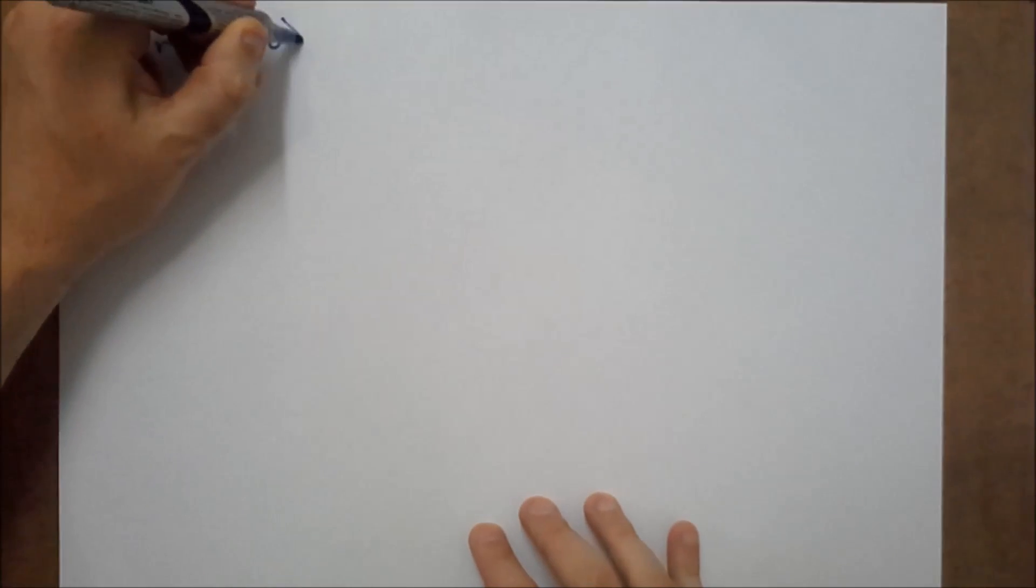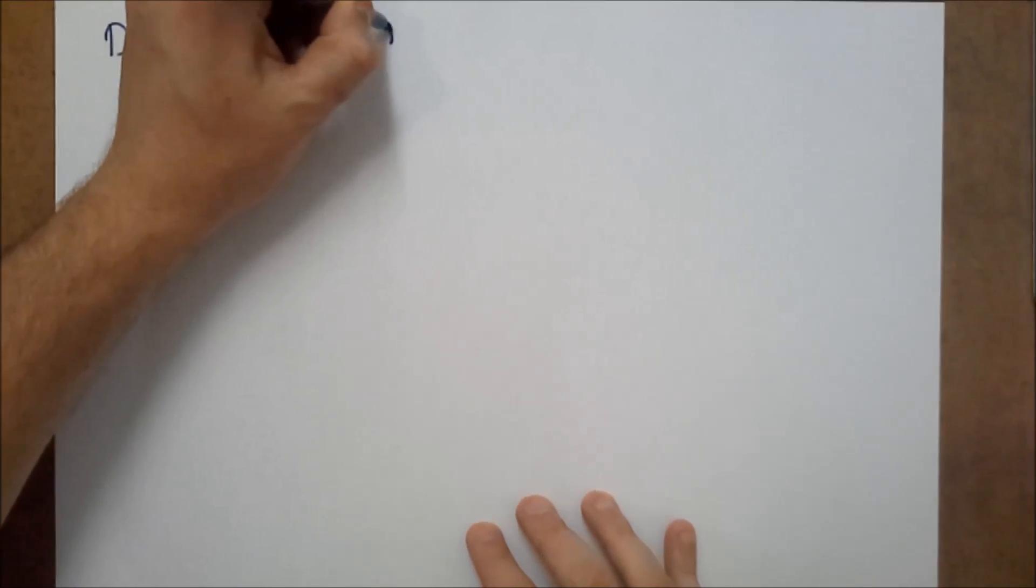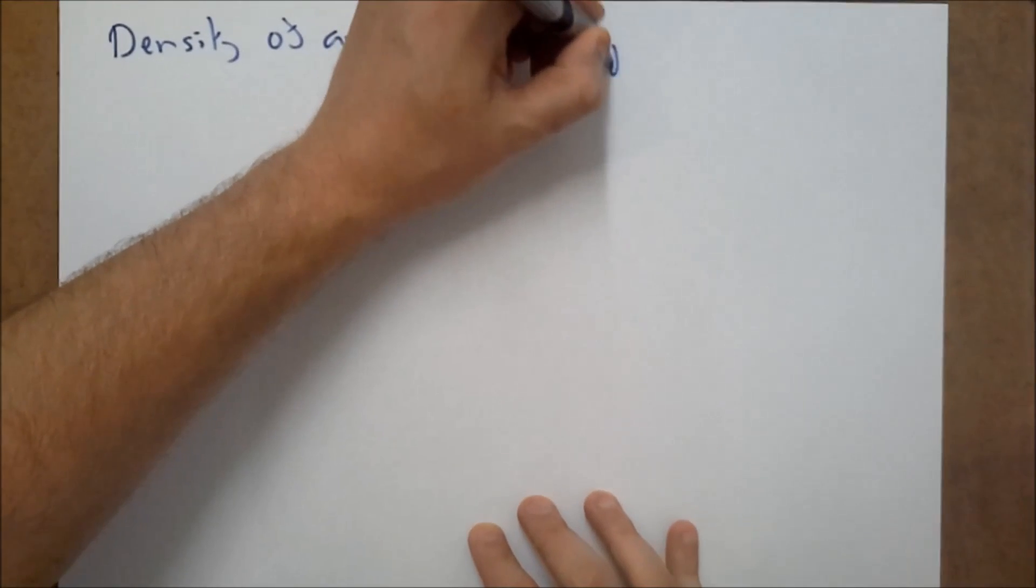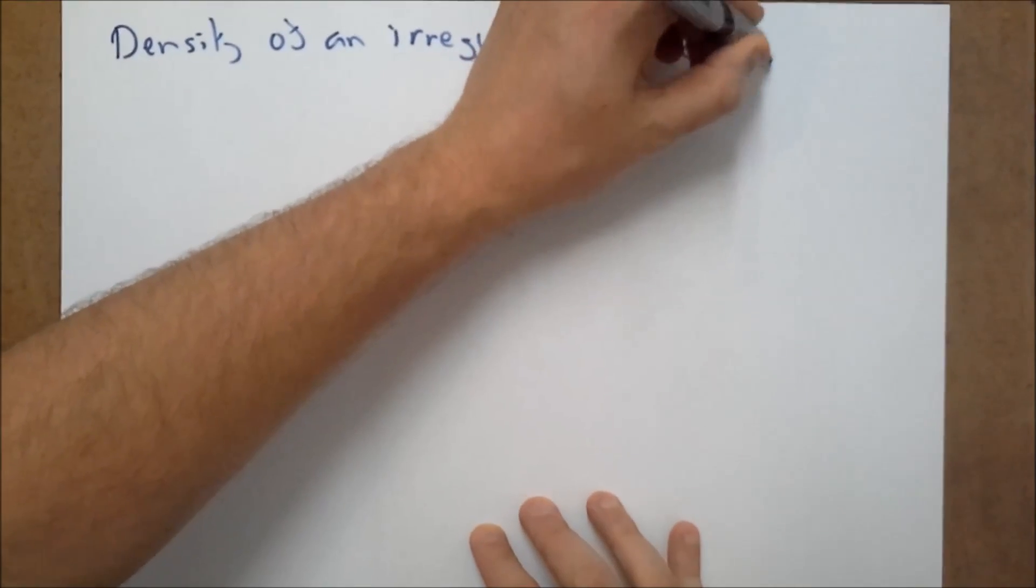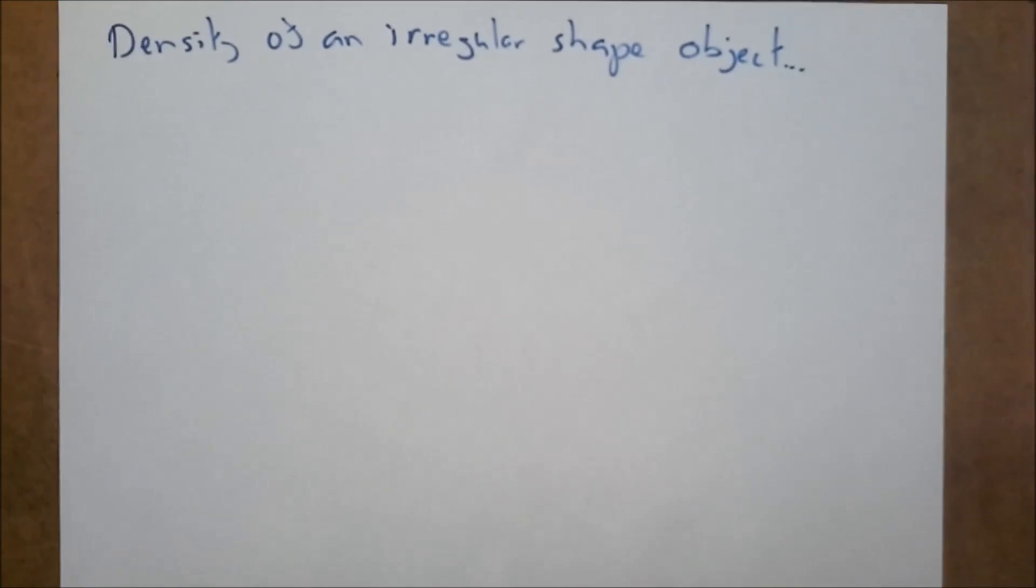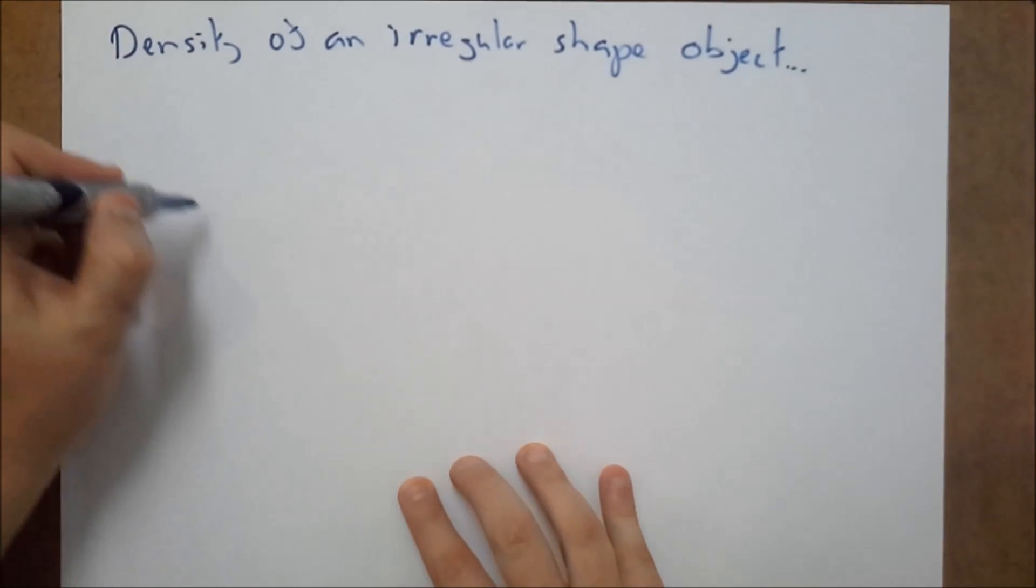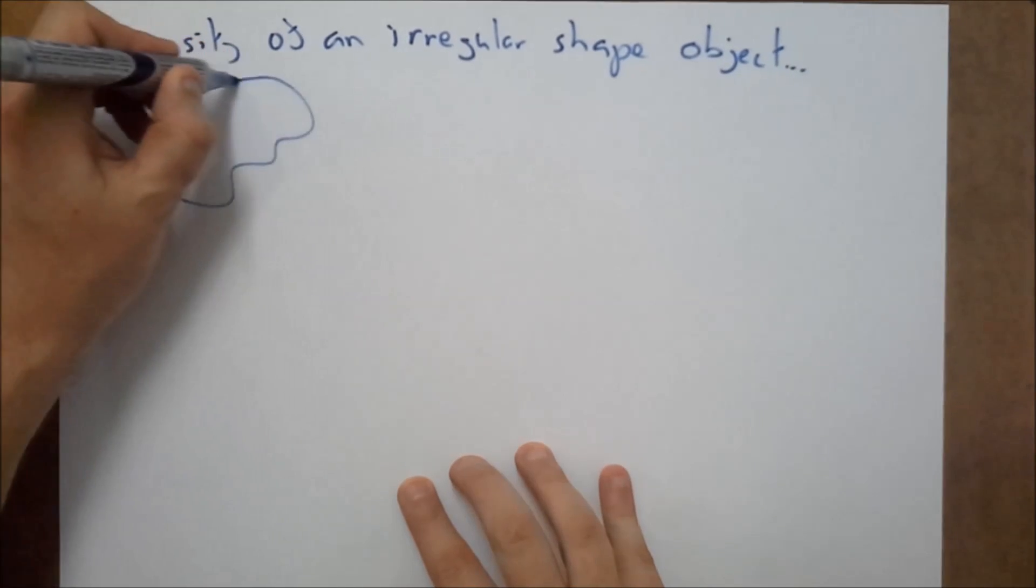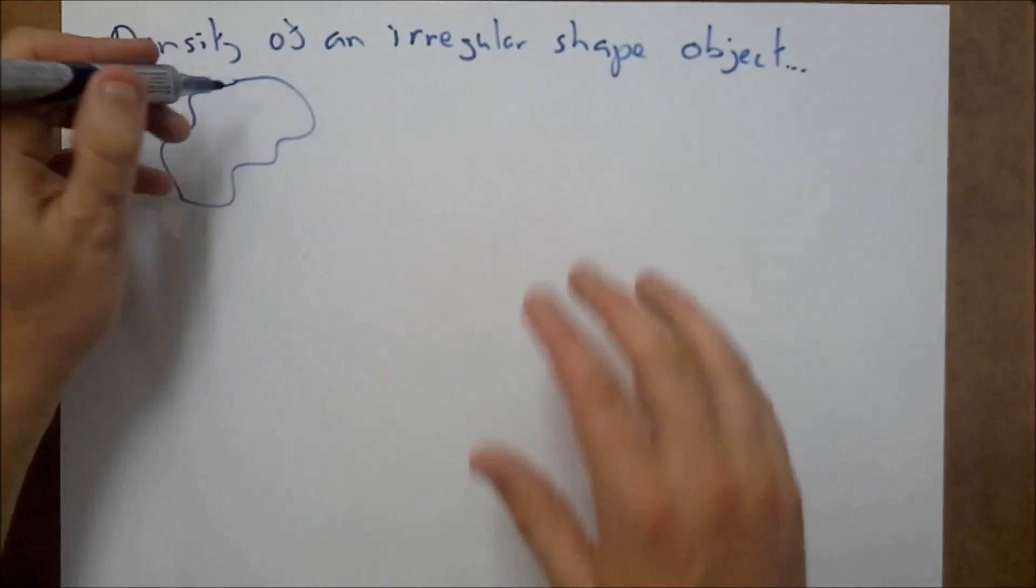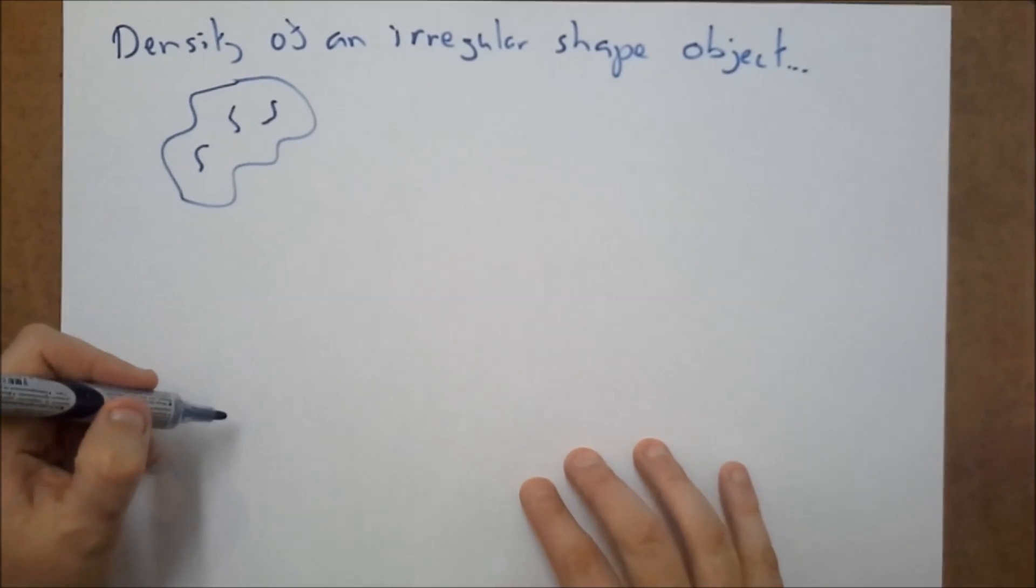Now what's going to happen if we need to find the density of an irregular shaped object? How are we going to find the density of an irregular shaped object? Well, there are two different methods. You've got an object. You have no idea how to calculate its volume because it's all over the place. This could be a stone or something.